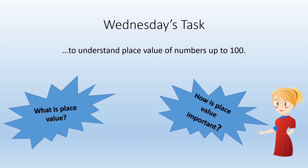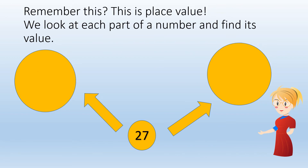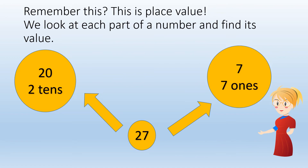Wednesday's task: to understand place value of numbers up to 100. What is place value and why is it important? Remember this? This is place value. We look at each part of a number and find its value. The number 16 is a 1 and a 6. The 1 is 1 ten and the 6 is 6 ones. Try number 27: 2 tens, 7 ones, 20 and 7.